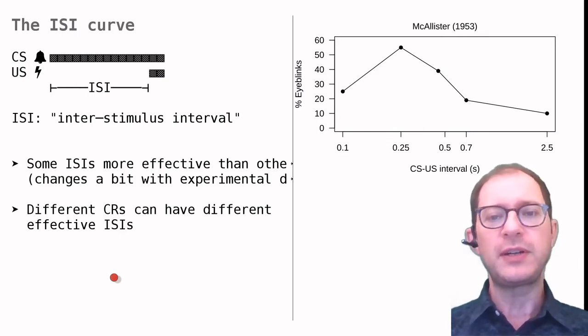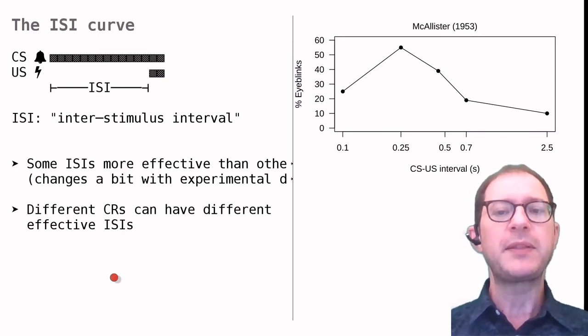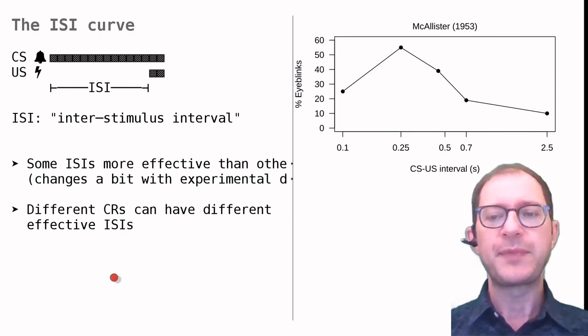For shorter or longer ISIs, Pavlovian conditioning was less effective, meaning that people learned to blink less. For ISIs longer than about two and a half seconds, there was practically no learning.